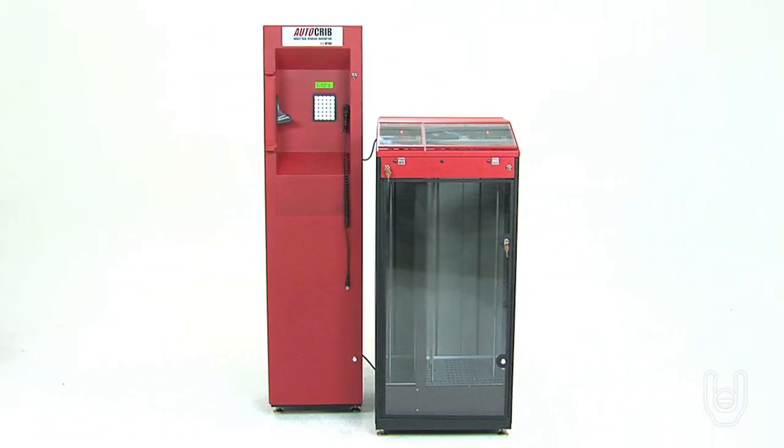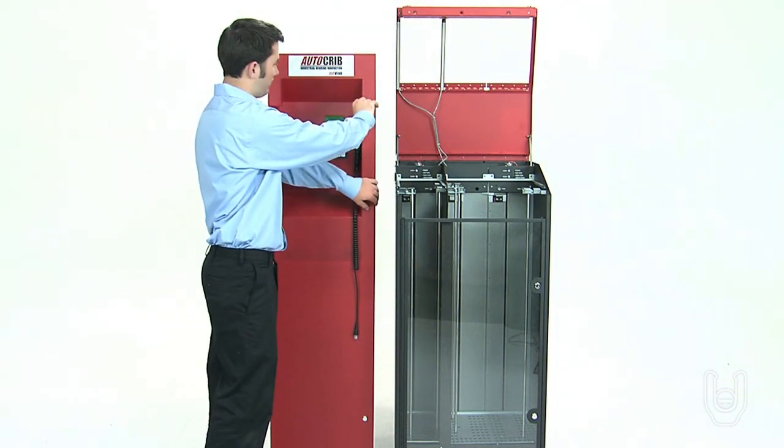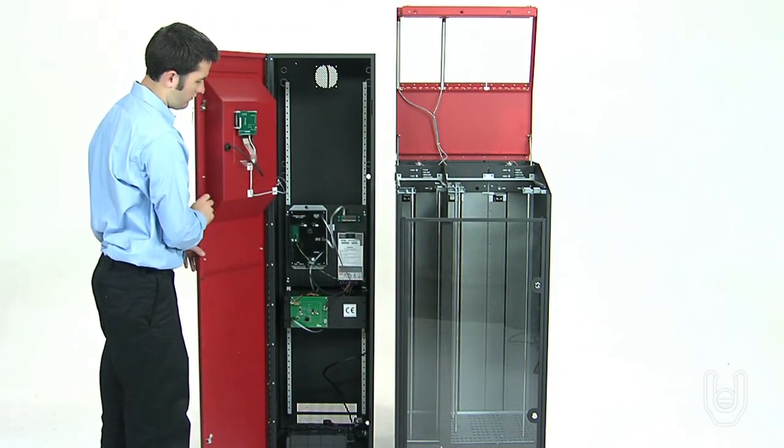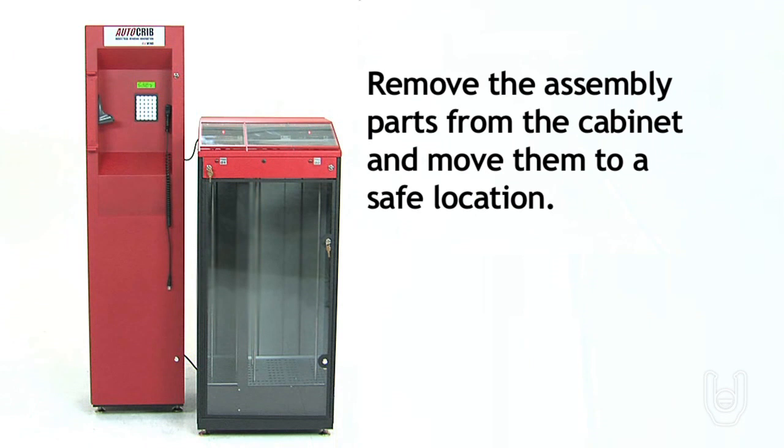Now let's assemble the cabinets and the control tower. First, locate the keys attached to the control tower. Open the cabinet and remove the assembly parts and other components from the cabinet and move them to a safe location.